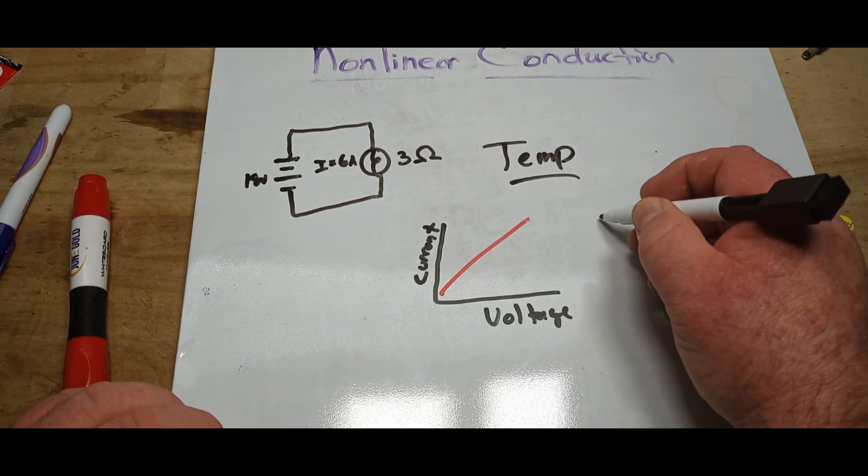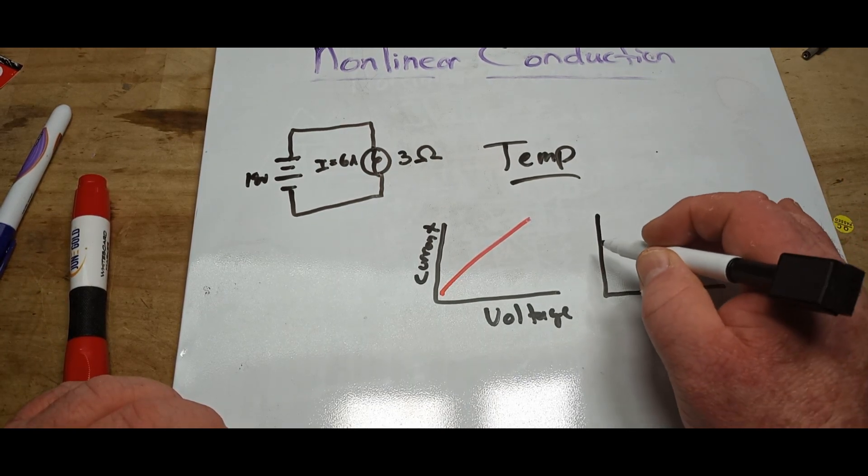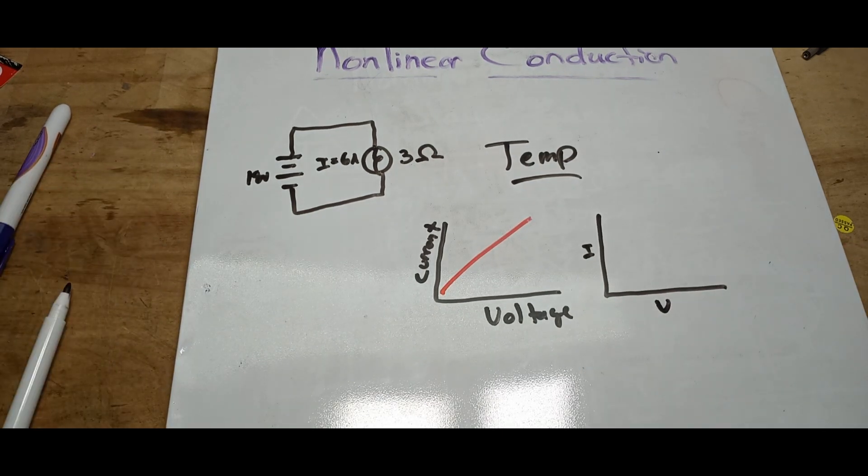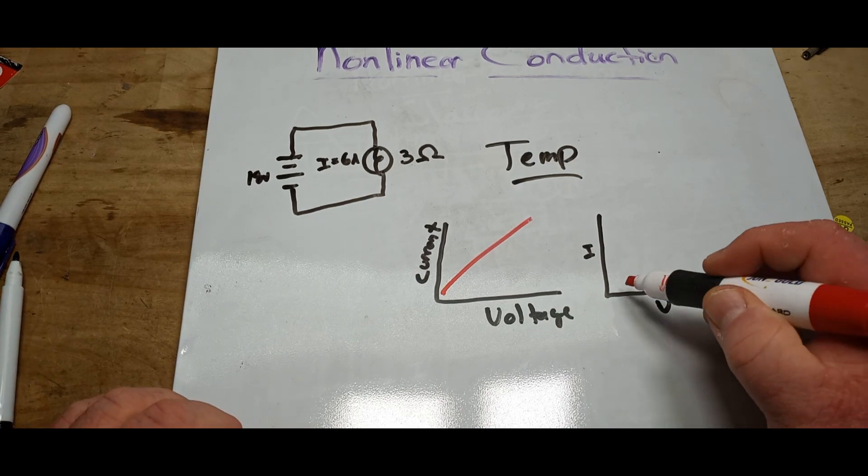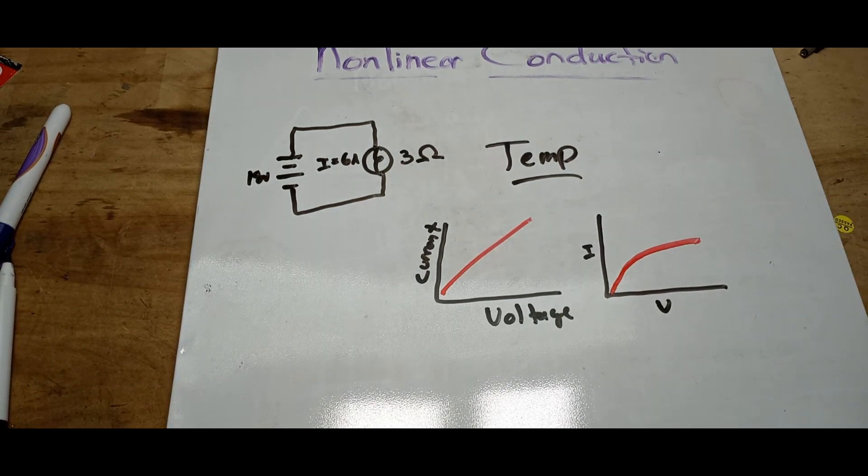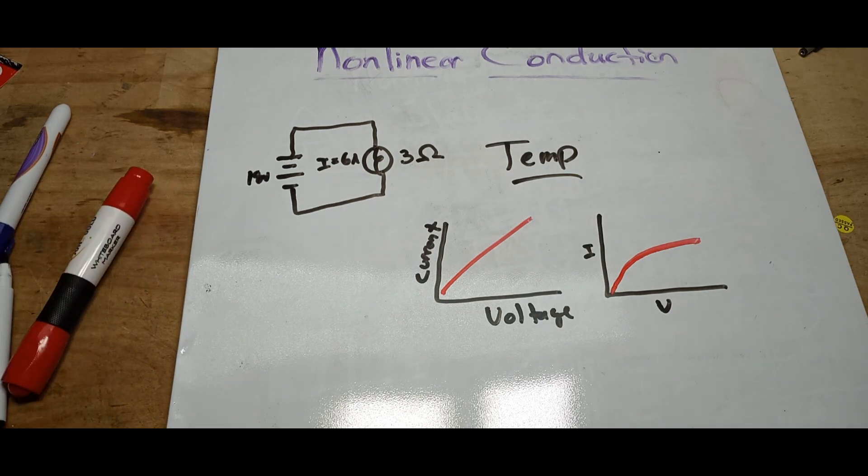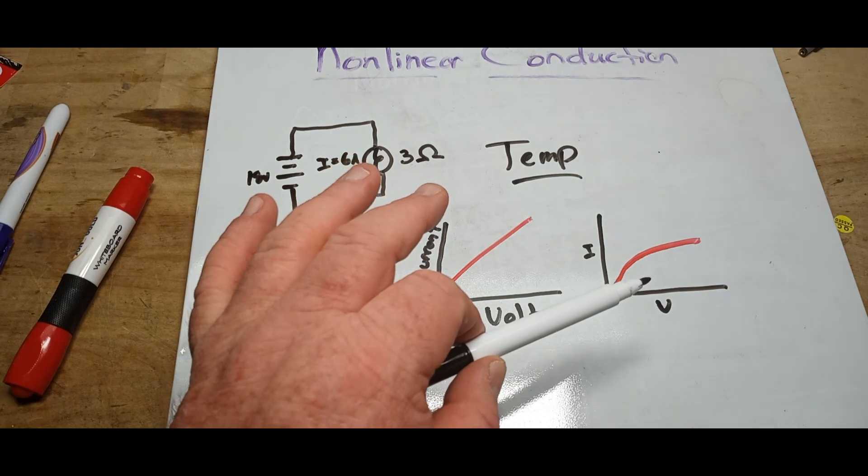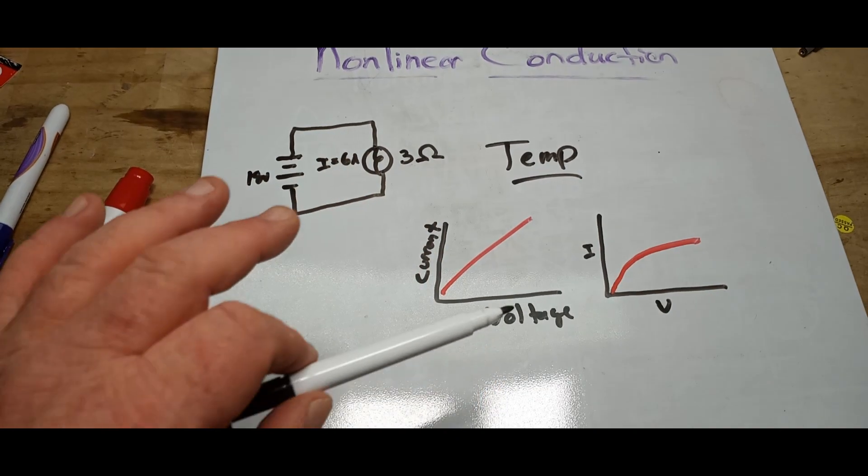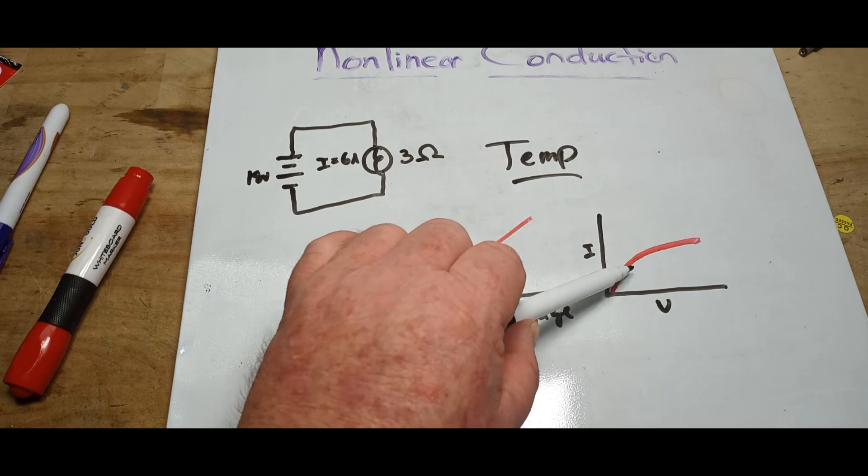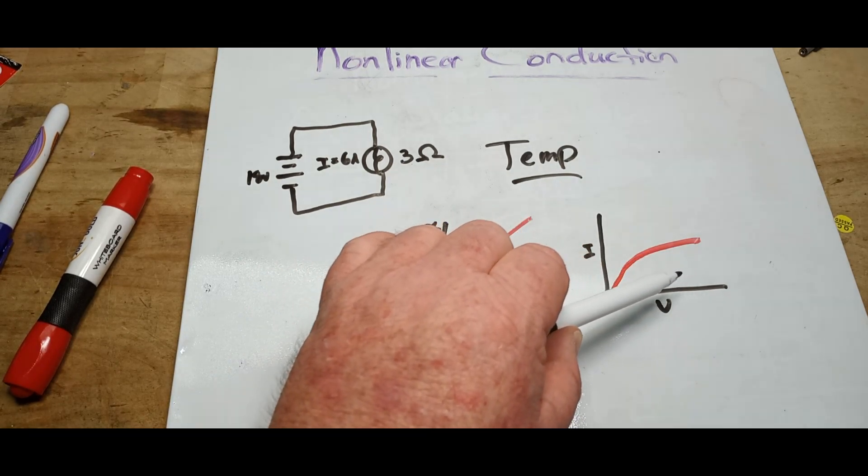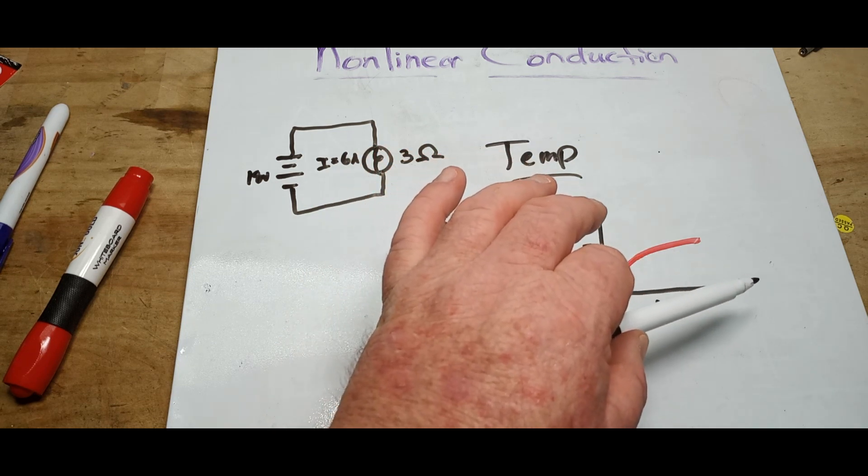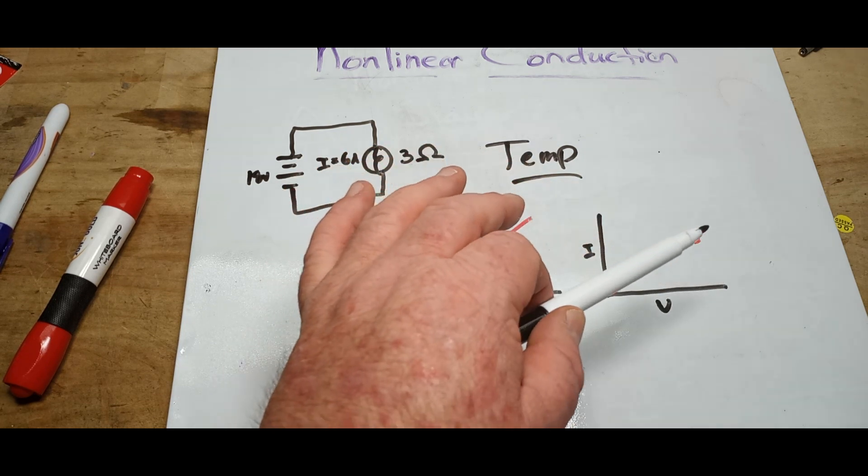But when we get to the nonlinear - put I and V here - what you're going to notice happening is the graph is going to look more like this over time. Are you with me still? You see, in this case the resistance rises sharply here, but then it starts to flatten out as the temperature of the lamp increases. And this is caused by the metal wire of the filament.